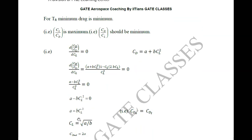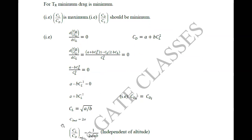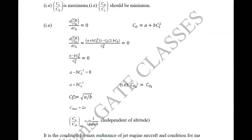From this, C_L for minimum drag equals √(a/b). When we substitute √(a/b) for C_L in the drag polar equation, C_D for minimum drag becomes 2a. And the aerodynamic efficiency L/D, that is C_L/C_D for minimum drag, becomes 1/(2√(ab)) — obtained by simply dividing C_L by C_D.